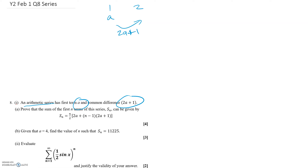With sequences questions I like to write out the first few terms just to see what's going on. The first term is a, the second is 3a plus 1, and if you add another 2a plus 1, the third term is 5a plus 2.